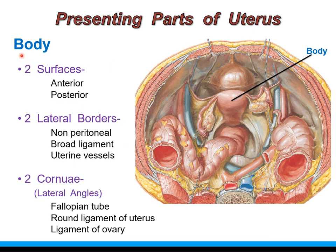To revise: the body has two surfaces — anterior and posterior — and two lateral borders to which the broad ligament is attached; the lateral borders are non-peritoneal. Along the lateral borders, uterine vessels run. The two cornua or lateral angles are seen at the junction of fundus and body. At each corner, three structures are attached: the fallopian tube, the round ligament of uterus, and the ligament of ovary.